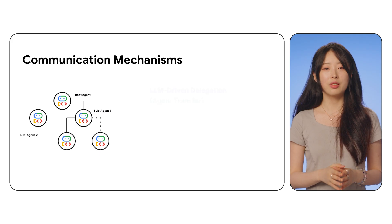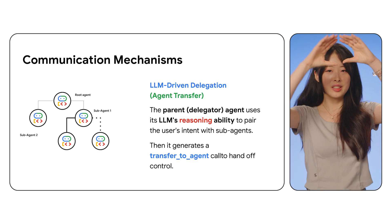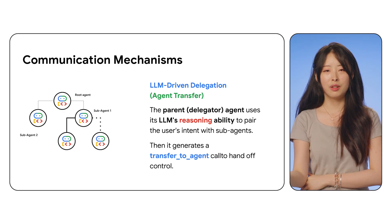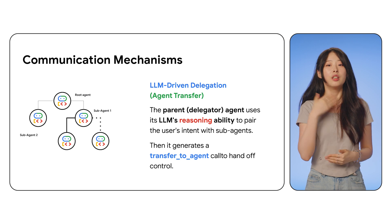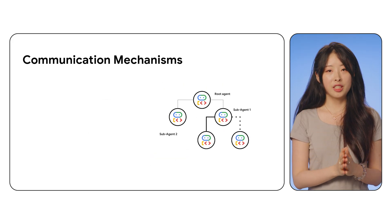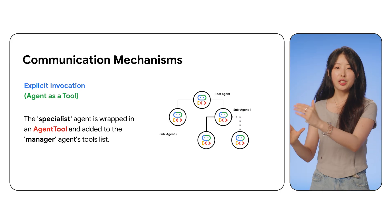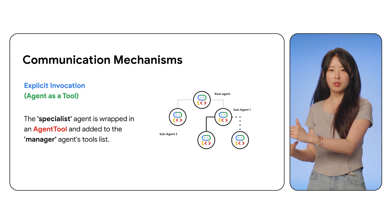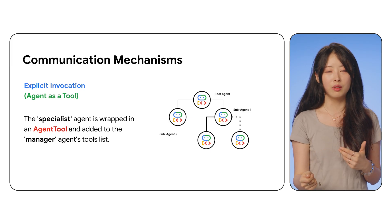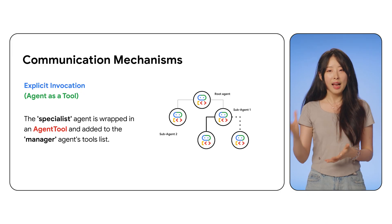The second type of communication mechanism is LLM-driven delegation — that's where it gets smart. A coordinating agent acts like a CEO: it looks at the request and decides which sub-agent to delegate to. For example, if the request is to generate an invoice, the CEO will route it to the billing agent. The third type of communication mechanism is explicit invocation — agent as a tool. Here, one agent can call another agent like a function instead of using it as a sub-agent. You wrap the target agent as a tool, and the parent decides when to invoke it. For example, a parent agent doing analysis might call a calculator agent as a tool whenever math is required.